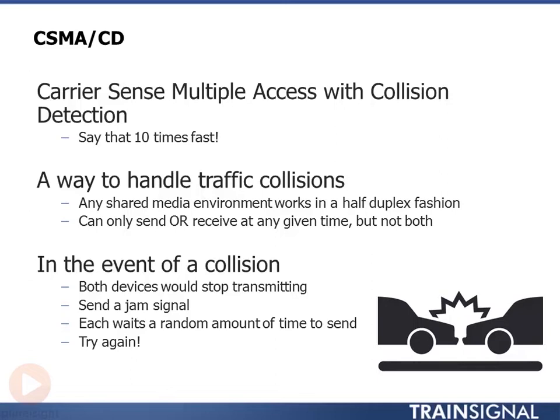CSMA/CD was the way to handle traffic collisions. It doesn't necessarily avoid traffic collisions — back in the day, collisions just happened because all the media was shared and there was no dedicated switch port. On a repeater, if both sides tried to transmit at the same time they would collide. CSMA/CD handled that by running at half duplex, which means you can send or receive at a given time, but not both.